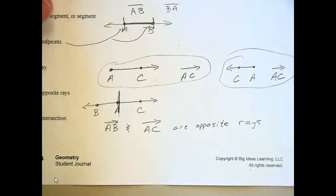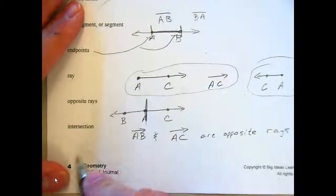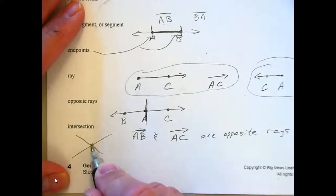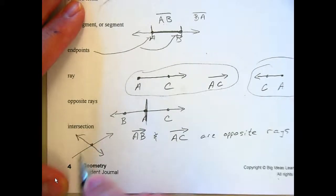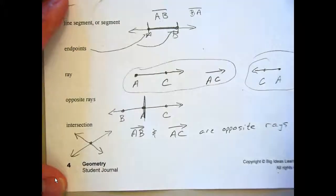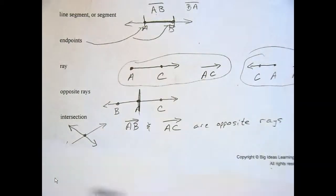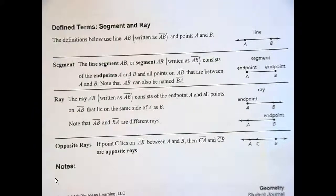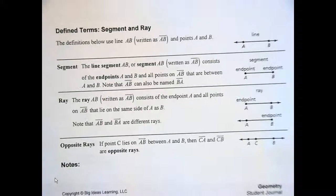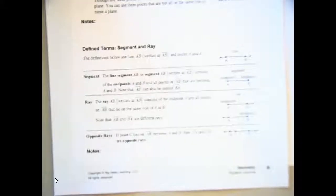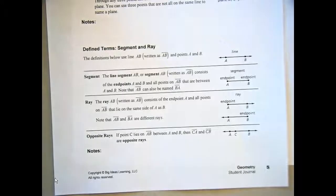Any questions? If two things intersect — you're going to see this a lot — two lines intersect at a single point in planar geometry. That would be the intersection. For those of you that finished all that and look at the next page of your journal, they actually show you all those definitions in a nice, beautiful way as well. Now you have them in your notes, so you can add anything you want to.